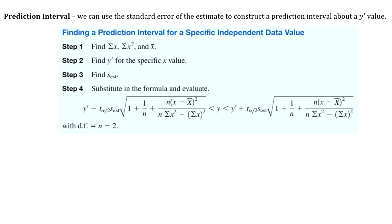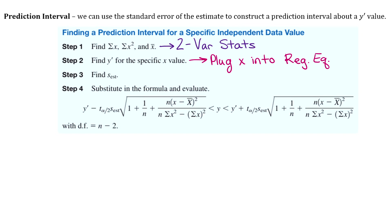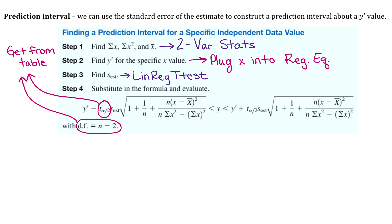Before we go through the steps, here are some notes on where to go in your calculator. Step 1 — three values it asks you to find — are found under two-variable stats. Step 2, to find y-prime, just plug your x value into the regression equation. Step 3, the standard error of the estimate, go to linear regression t-test. Step 4 requires the t critical value. We'll get that from the table in your notes using degrees of freedom and whatever n is.